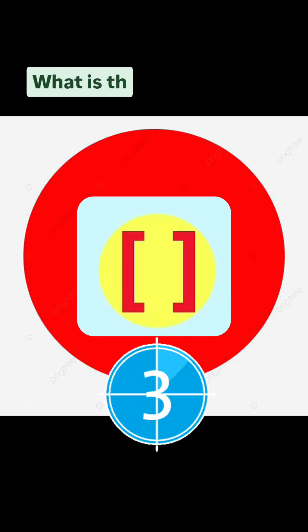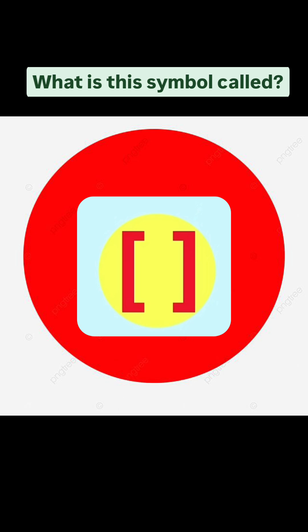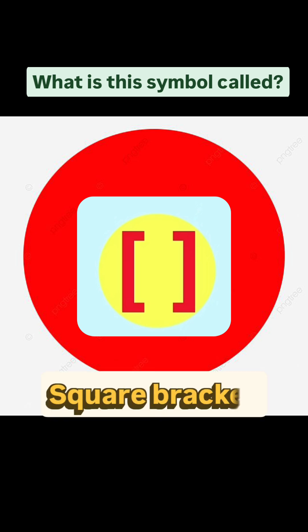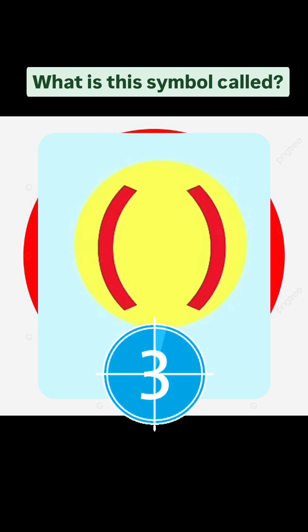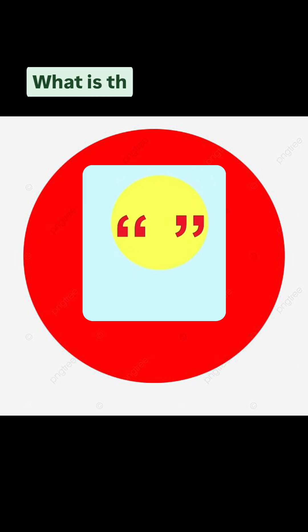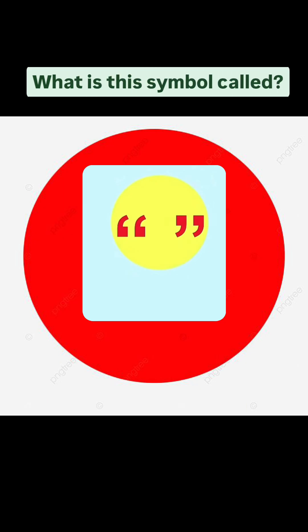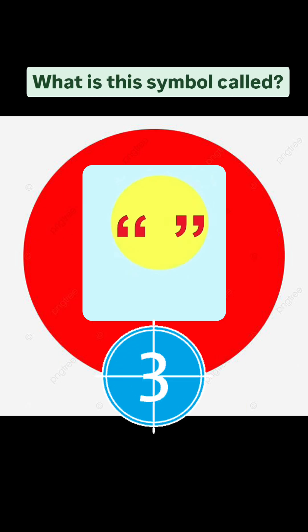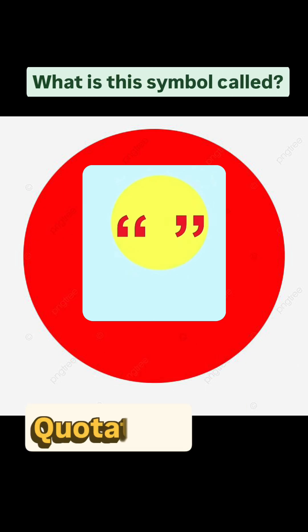What is this symbol called? Square bracket. What is this symbol called? Parenthesis. What is this symbol called? Quotation marks.